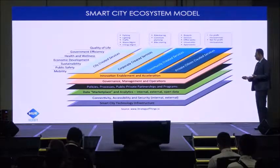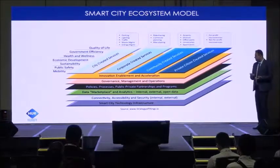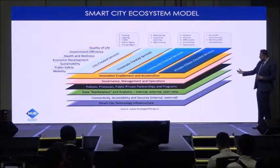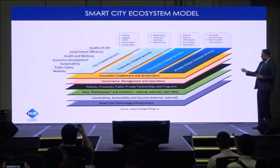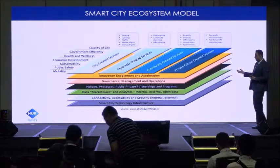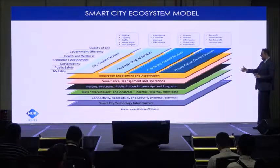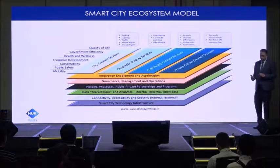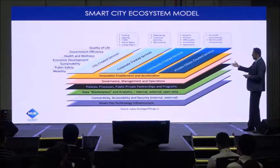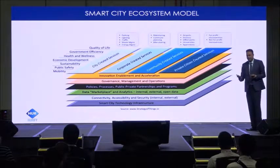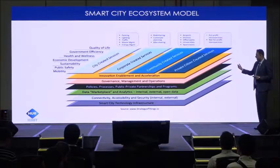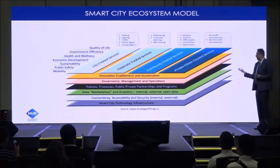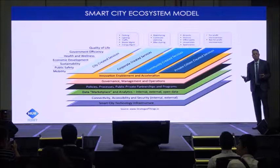This is a simple example of a smart city ecosystem. It's basically a layered architecture where we have infrastructure at the bottom — connectivity, accessibility, and security systems — then data marketplaces, analytics, and policies, and at the top, different services geared towards various consumers: city-graded services like parking, traffic, and lighting; corporates like ride sharing and commute planning; community facilities like airports and office parks; and private citizens with microservices based for-profit as well as non-profit.